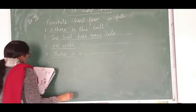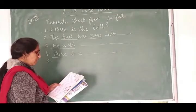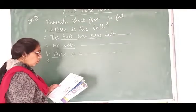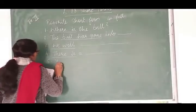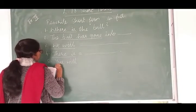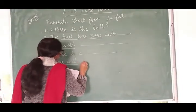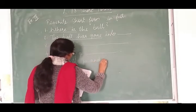Then, fifth one. You, apostrophe double L, go and get it. Won't you? Toh, you, apostrophe double L kya ho jayega? Uska hai? You will. You will. Ye hai hamara short form hua, full form, okay? Go and get it.